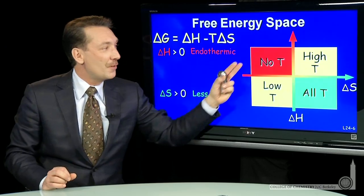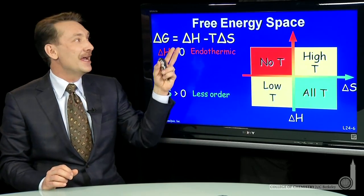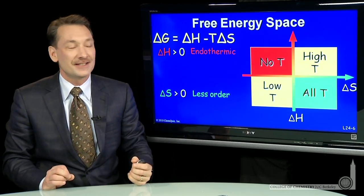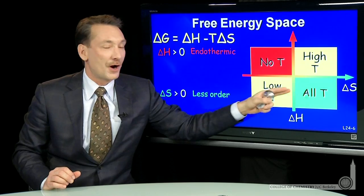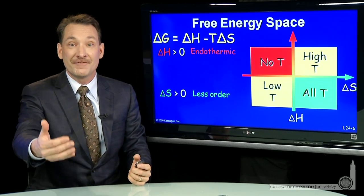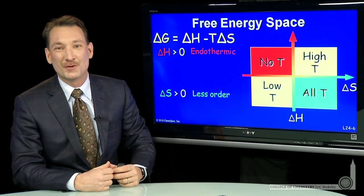So we have four quadrants of the Gibbs free energy space and different temperature requirements to have spontaneity or favored chemical reactions in each quadrant.